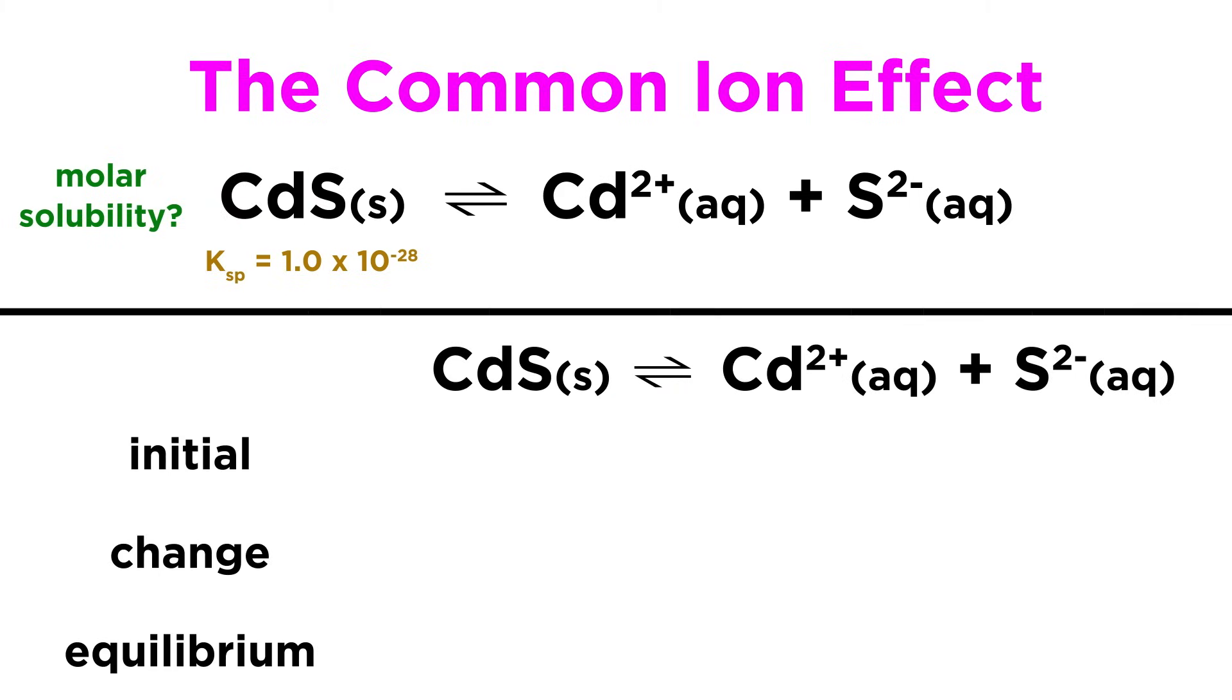Let's then set up an ICE box for the cadmium sulfide equilibrium. We know the initial concentration of cadmium ion is 0.01 from the cadmium bromide, and there is no sulfide at first.